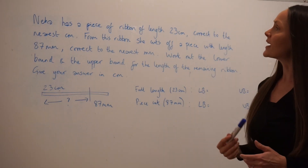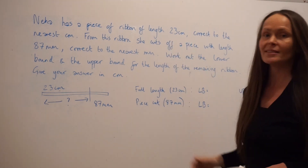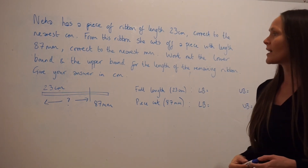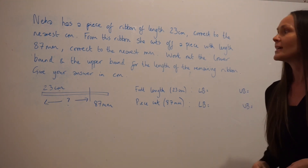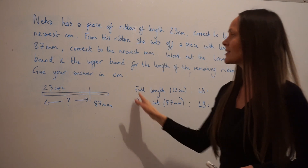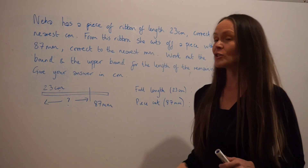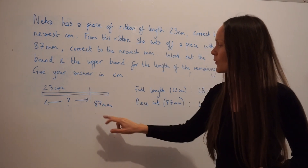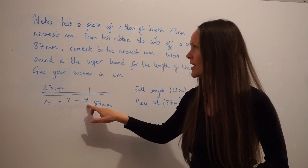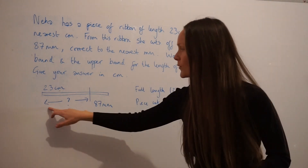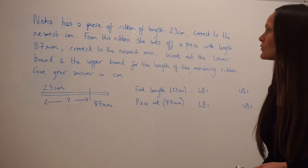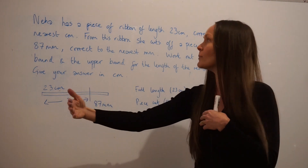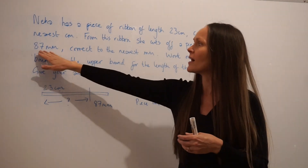In this final question, it says that Niha has a piece of ribbon of length 23 centimetres correct to the nearest centimetre. And from this ribbon, she cuts off a piece with length 87 millimetres correct to the nearest millimetre. Work out the lower bound and the upper bound for the length of the remaining ribbon, giving your answer in centimetres. I've done a little diagram showing the piece of ribbon measuring 23 centimetres. This line shows where she's going to cut the ribbon, and this part she cuts off is 87 millimetres. We're trying to work out the lower and upper bound of the remaining ribbon.